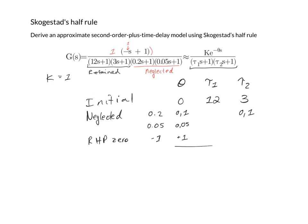Now that we have all of our neglected terms taken into account, we simply sum all of these effects, leading to a time constant of 3.1, a time constant of 12, and a time delay of 1.15.